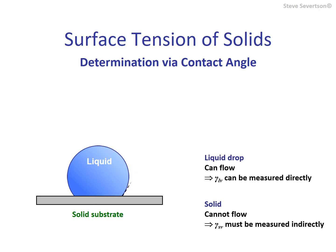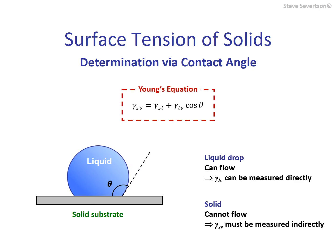From Young's equation, the surface energy can be calculated from the surface tension of a liquid, its contact angle on the solid, and the solid-liquid interfacial energy. Both the surface tension of the liquid and its contact angle can be measured directly, but the solid-liquid interfacial energy cannot be measured directly. It can, however, be approximated. We will show how this is done in practice by reviewing a few of the most common approaches.